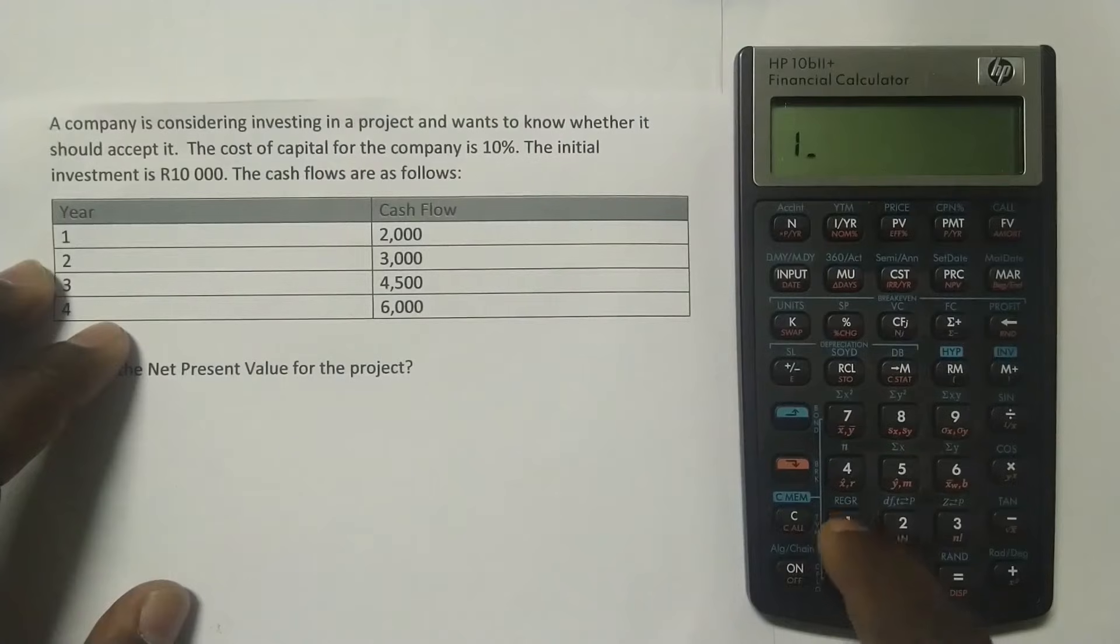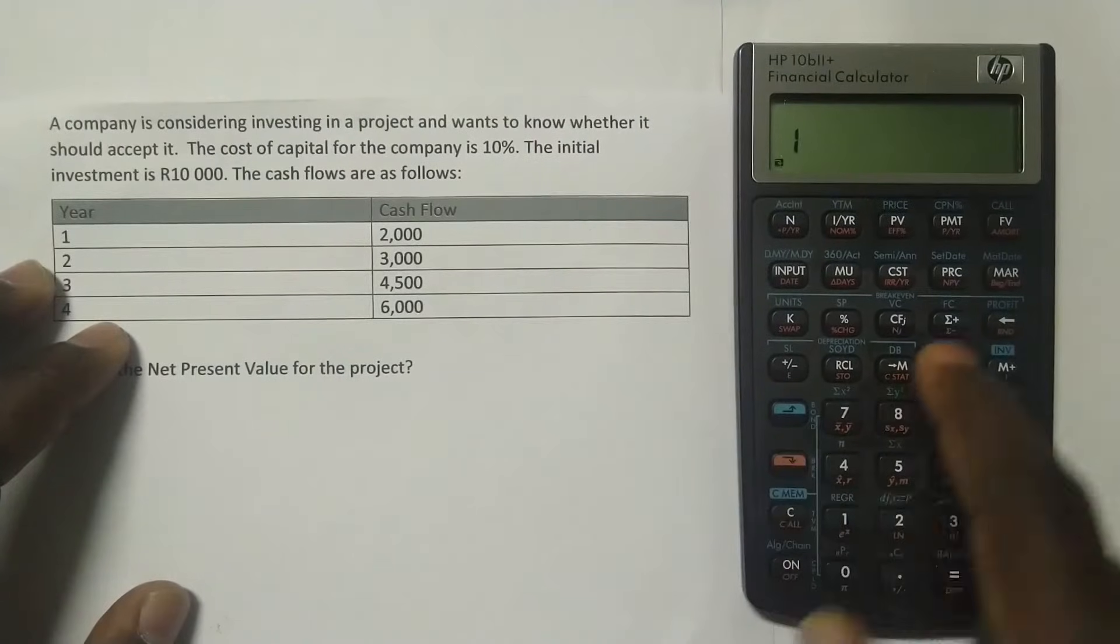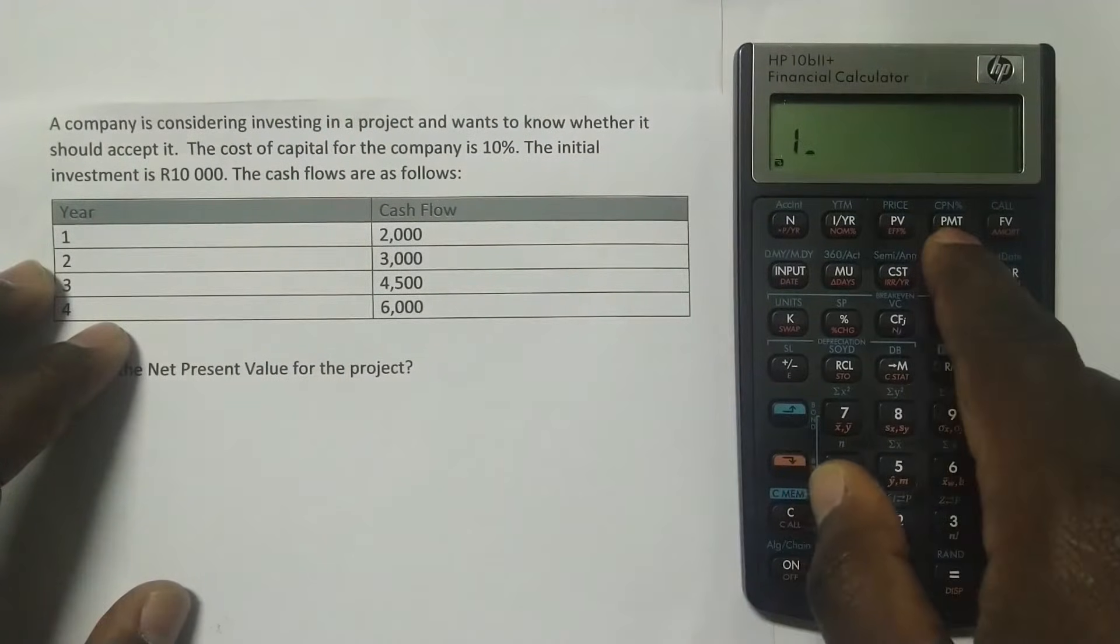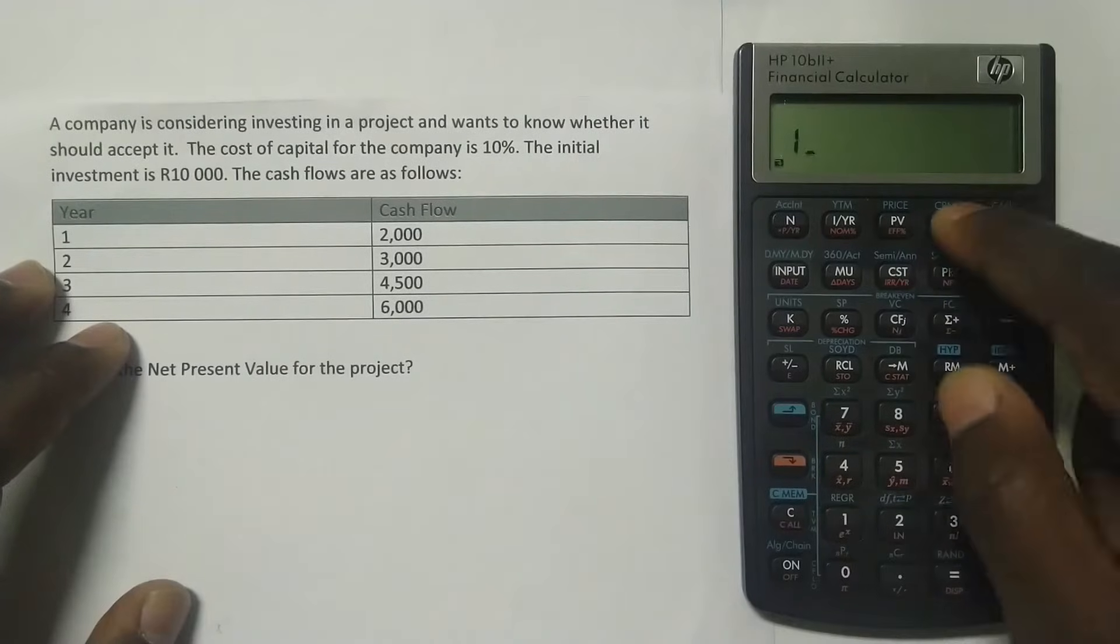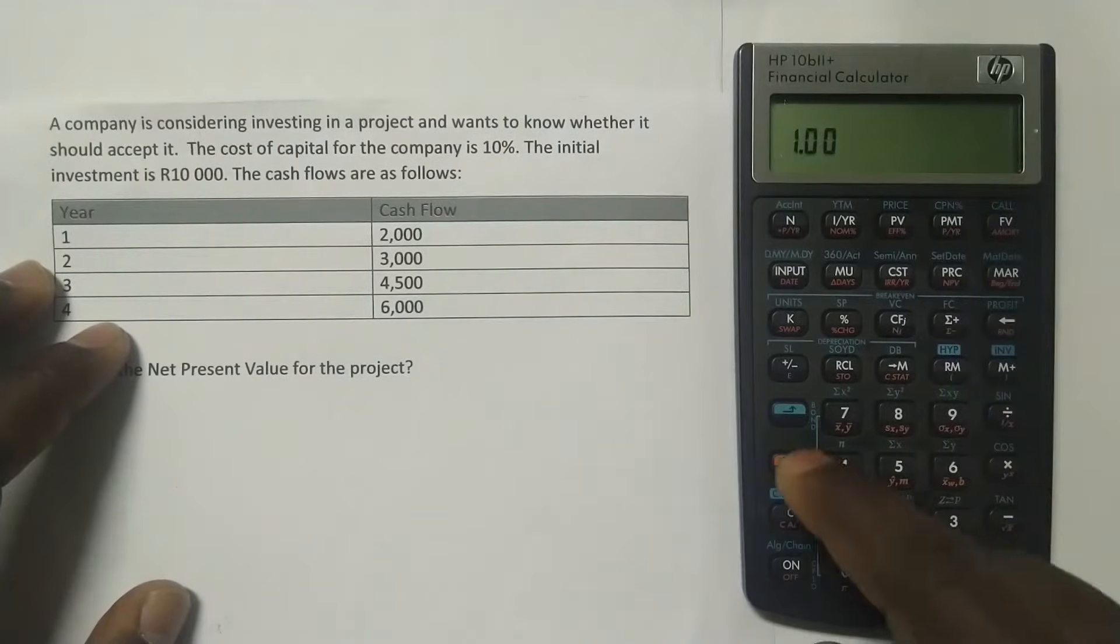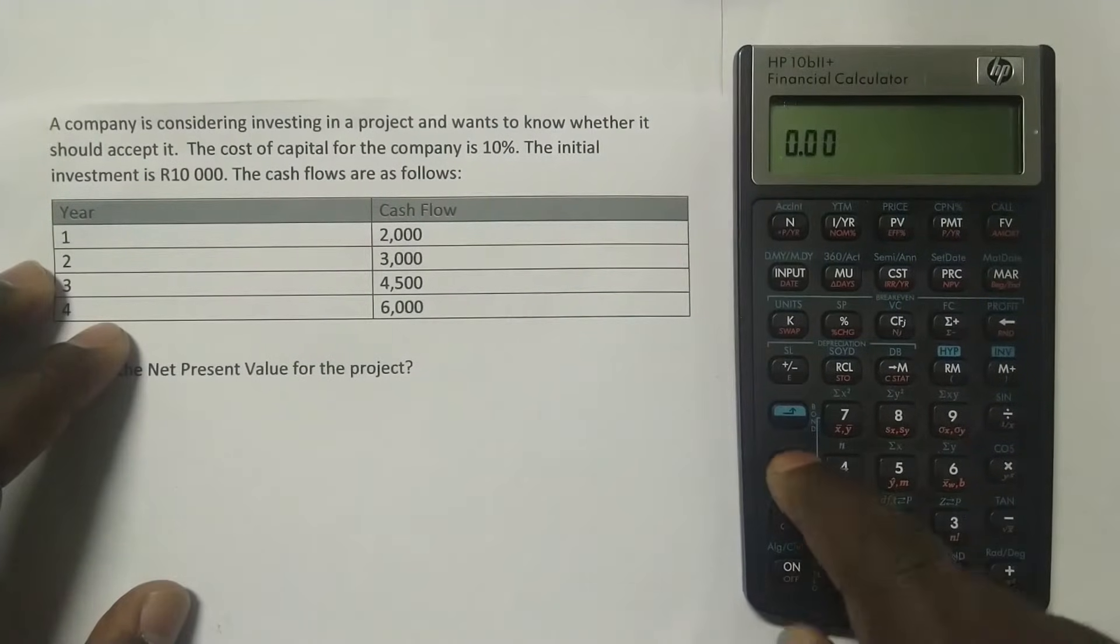How do you do that? You just press one, and then you press the orange button, and then you press this button where it's written PMT. You can see underneath it's written P slash YR, which means payments per year. So you press one, orange button, PMT, and there it has changed it to one. If you'd like to check, just press orange, and then C again, and you can see it's showing you that it's one payment per year.